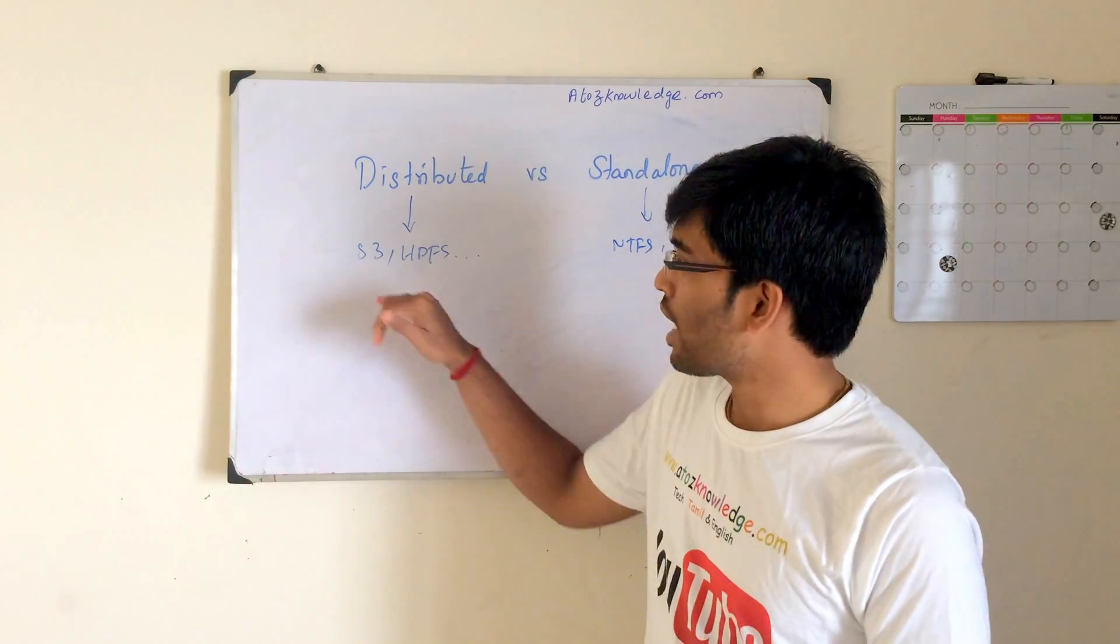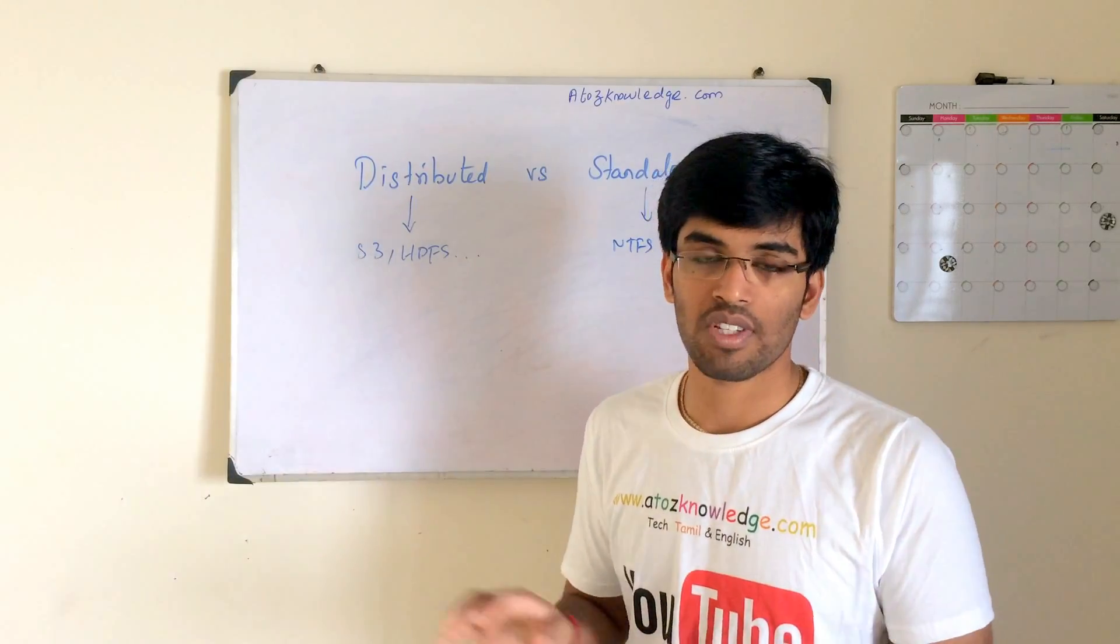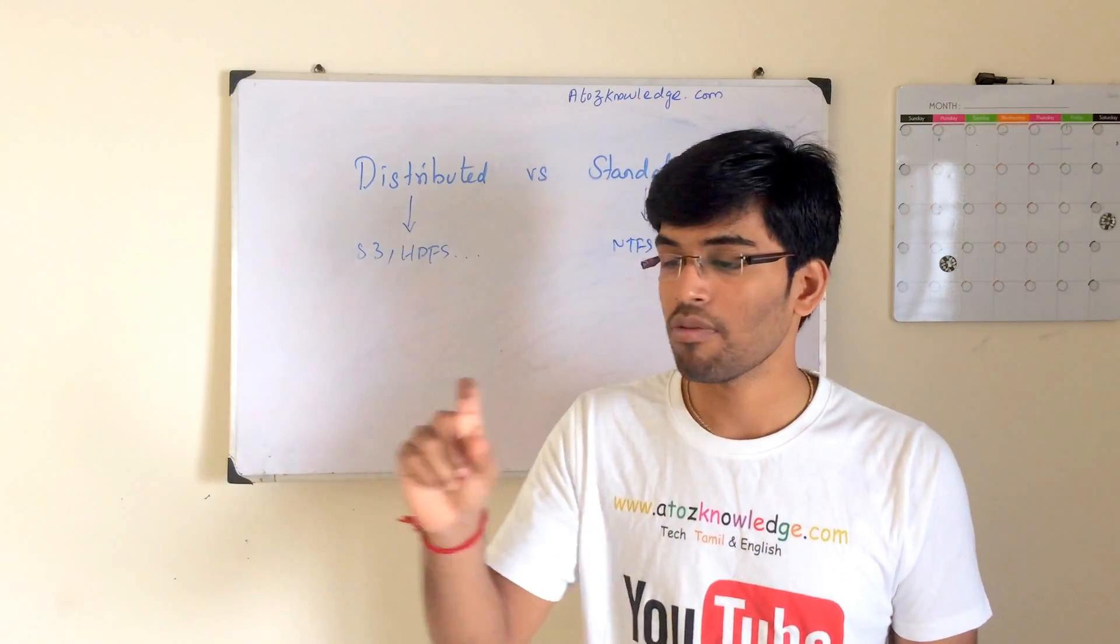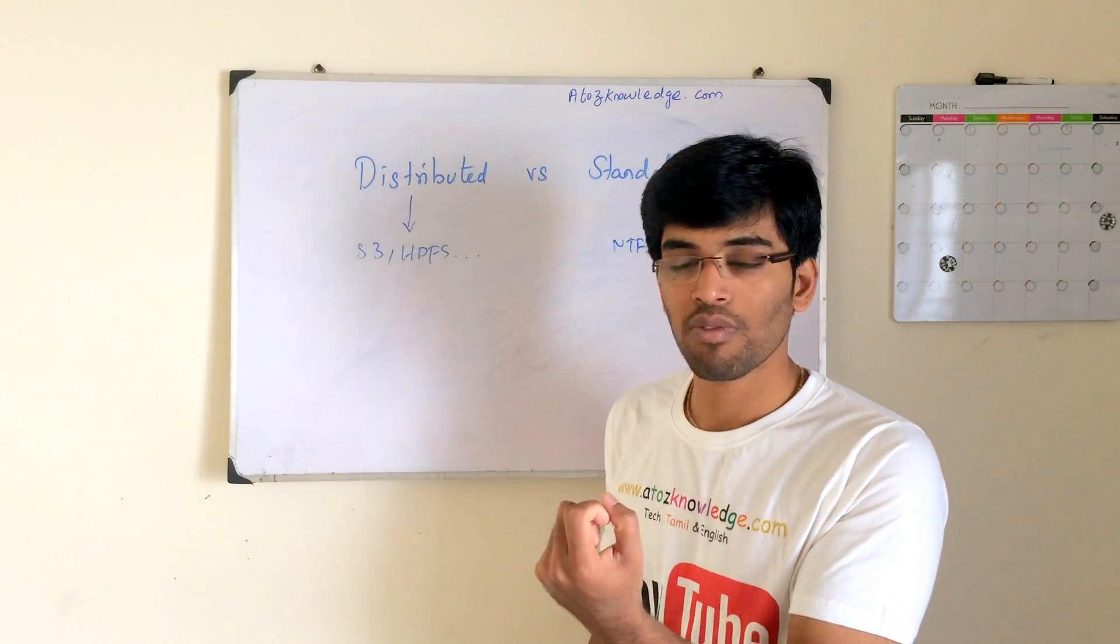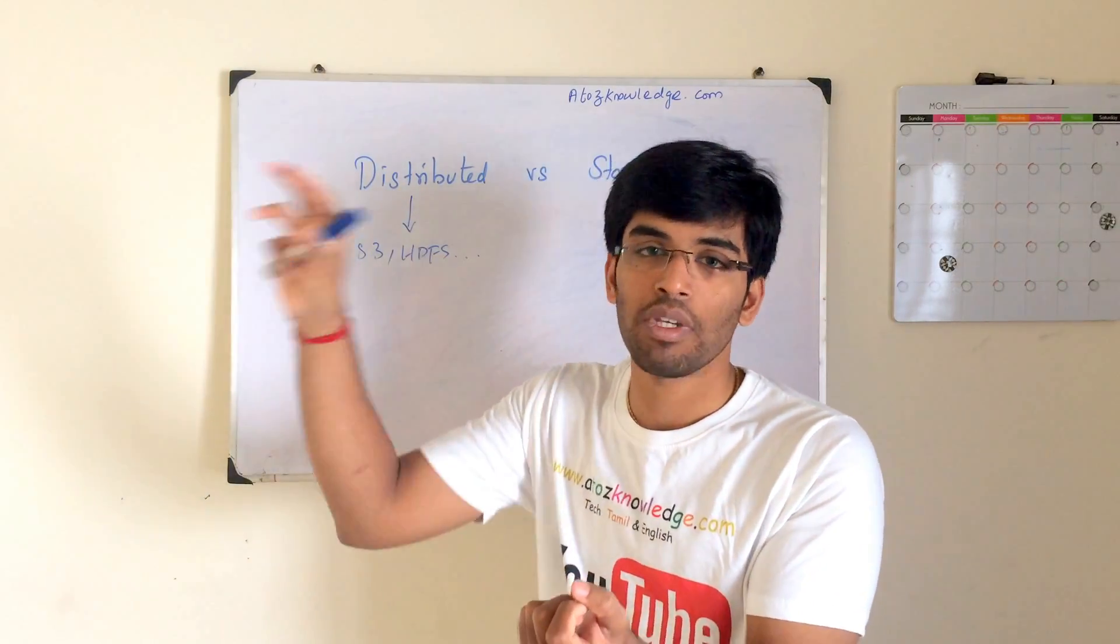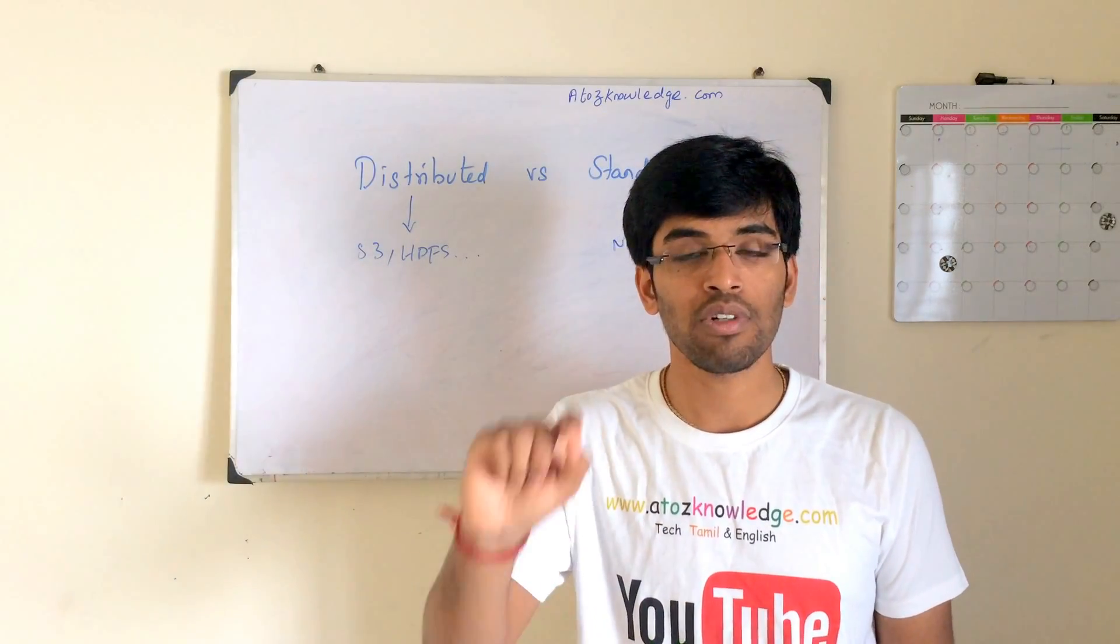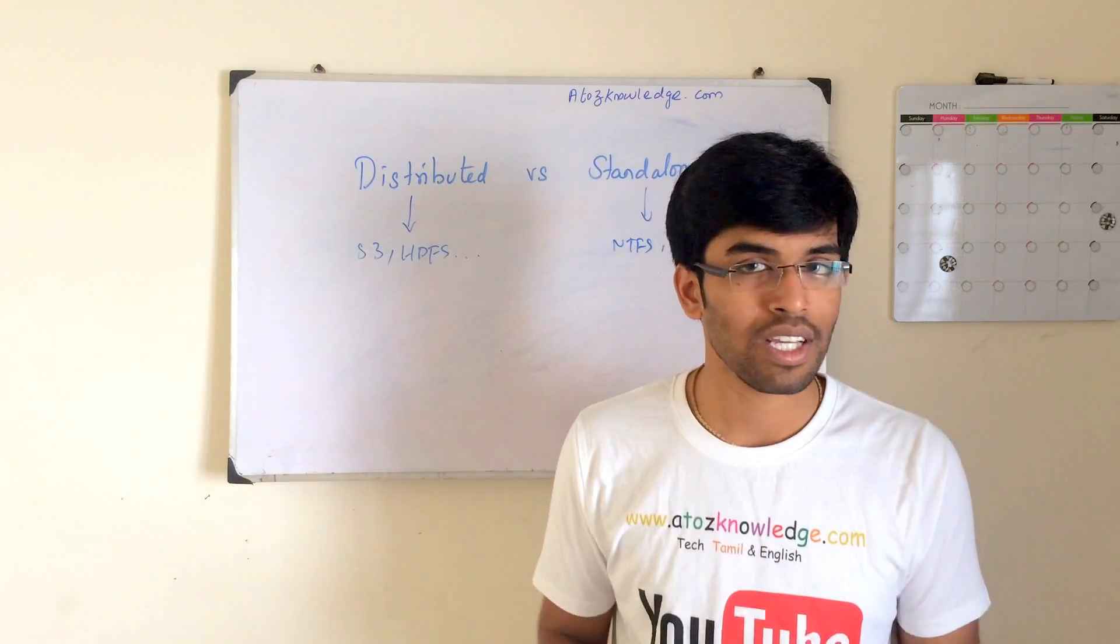So in the distributed world, if you take S3 and HDFS for example, I'm having 10 HDFS machines which is installed, Hadoop is installed. And when I give some 1 GB data to the first machine of Hadoop, what it will do? It will take that 1 GB file and it will cut it into small, small pieces and it will distribute it. That is where we used to say the particular computing or a file system is distributed or standalone. It's not on the physical structure.